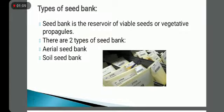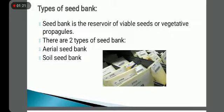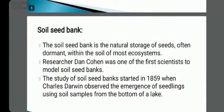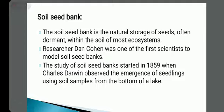A seed bank is the reservoir of viable seeds or vegetative propagates. The word 'viable' means capable of development or growth, so only seeds capable of development and growth are stored. There are two types of seed banks: aerial seed banks and soil seed banks.